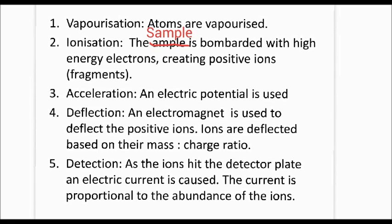We met mass-to-charge ratio in AS when we discussed that you sometimes get a peak at half the value for elements. So if you had an element with a mass of 80, you'd get a smaller peak at about 40 — half that value. This happens, quite rarely, when two electrons are knocked off, so you'd have a peak at m divided by 2z.